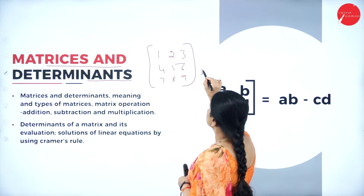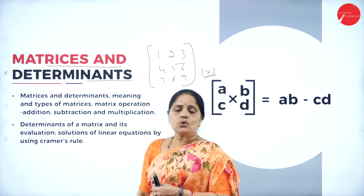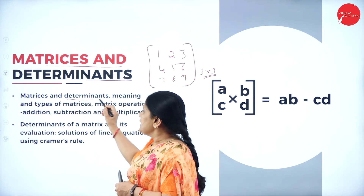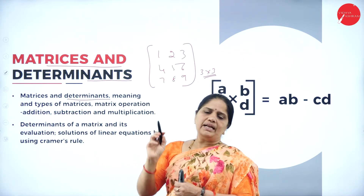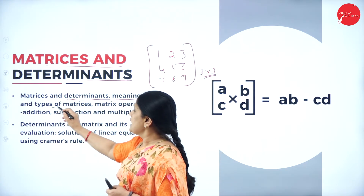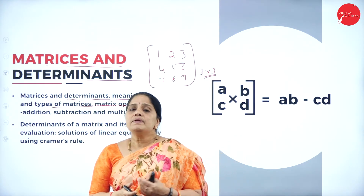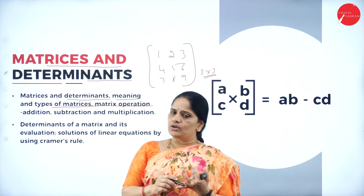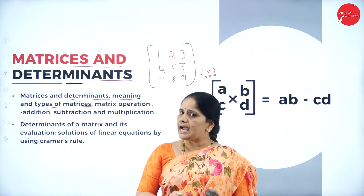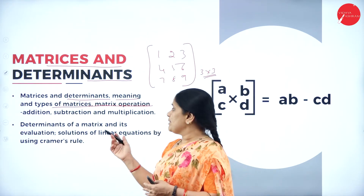This is a matrix of the order 3 by 3, meaning 3 rows and 3 columns. A determinant is the value of the matrix. We will study the meaning of determinants, then the types of matrices. In the types of matrices, we will be studying about what is a zero matrix or null matrix, what is a scalar matrix, and what is the identity matrix.